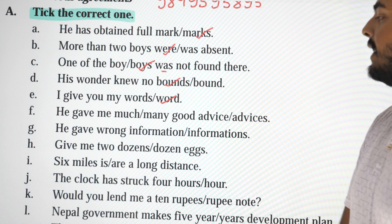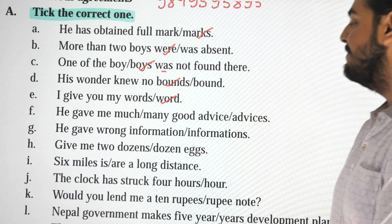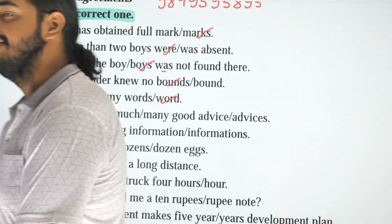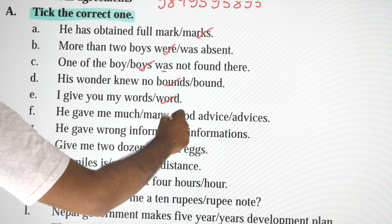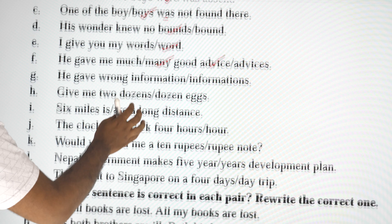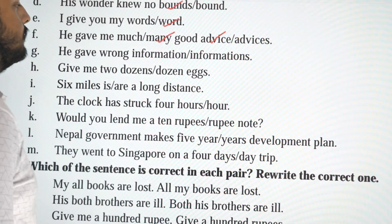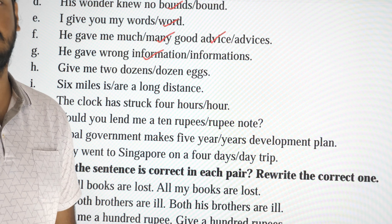He gave me much good advice, or he gave me many good advice? Advice is uncountable. He gave me much good advice. Information is also uncountable — he gave me wrong information.